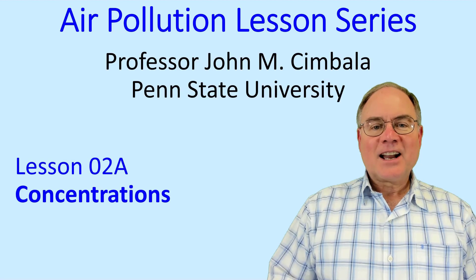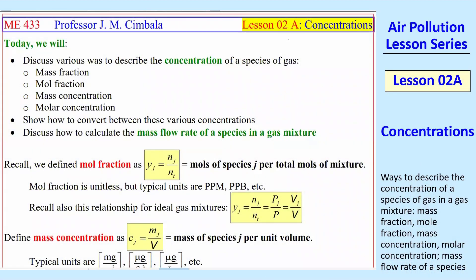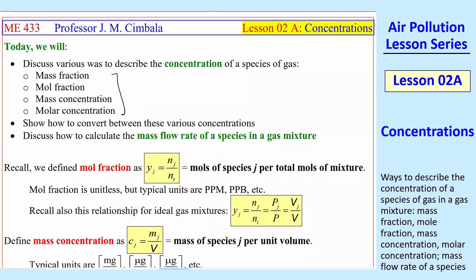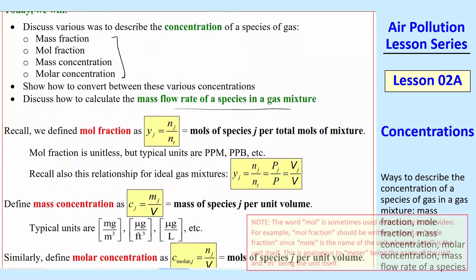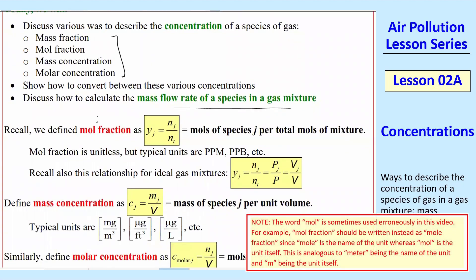Welcome to lesson 2a: Concentrations. We're going to discuss various ways to describe the concentration of a species of gas, assuming a gas mixture. We'll always assume ideal gas mixtures and show how to convert between these various concentrations, and also discuss how to calculate the mass flow rate of a species — not just the bulk flow rate, but the mass flow rate of the species in a gas mixture.